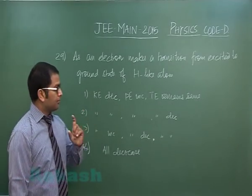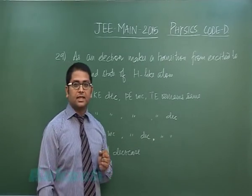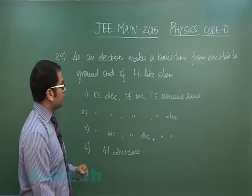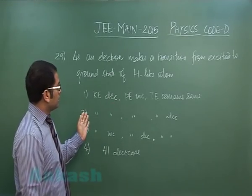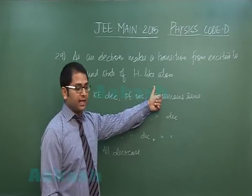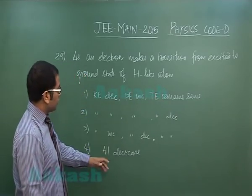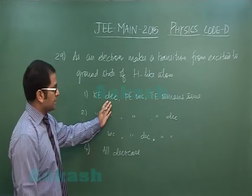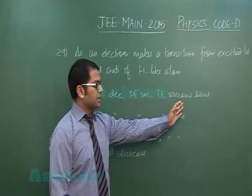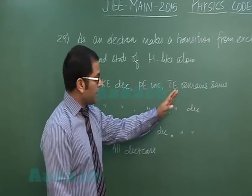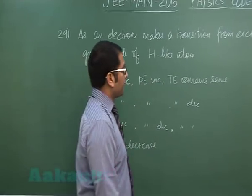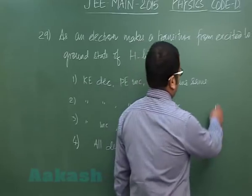Question number 29 from modern physics topic: as an electron makes a transition from excited to ground state of a hydrogen-like atom, both models would be valid. We need to comment on energy — kinetic energy decreases, potential energy increases, and total mechanical energy remains the same. In that way we have to choose the best option.